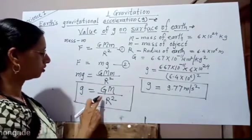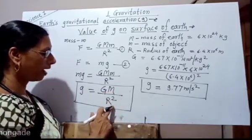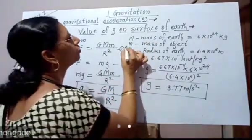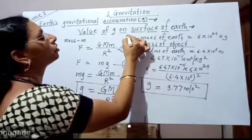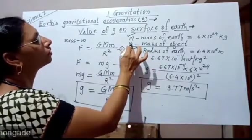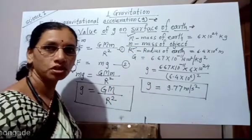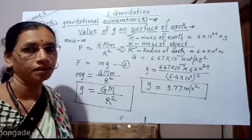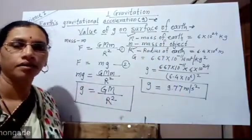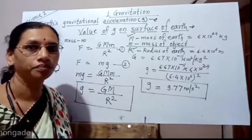From this formula, it is clear that the value of g depends upon the mass of the earth and the radius of the earth. It does not depend on the mass of the object. Therefore, the value of g at a point on the surface of the earth is the same for all objects.